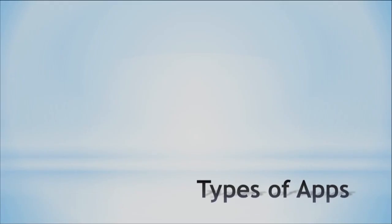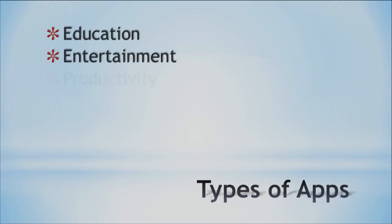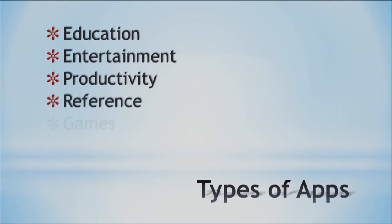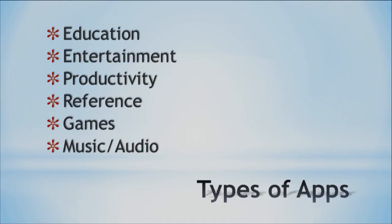So what types of apps can we actually find? Let's look at what's available. You can see that we have apps for education, entertainment, productivity, reference, games, and music and audio. There are a lot of different types and categories of apps — it's not just one all-encompassing thing. We can find apps for everything.